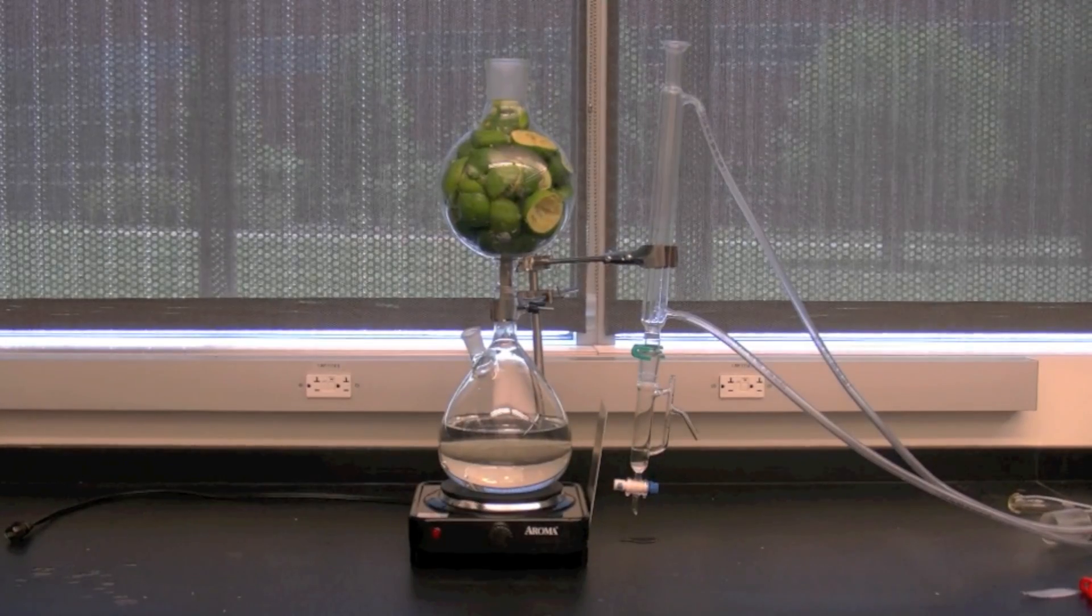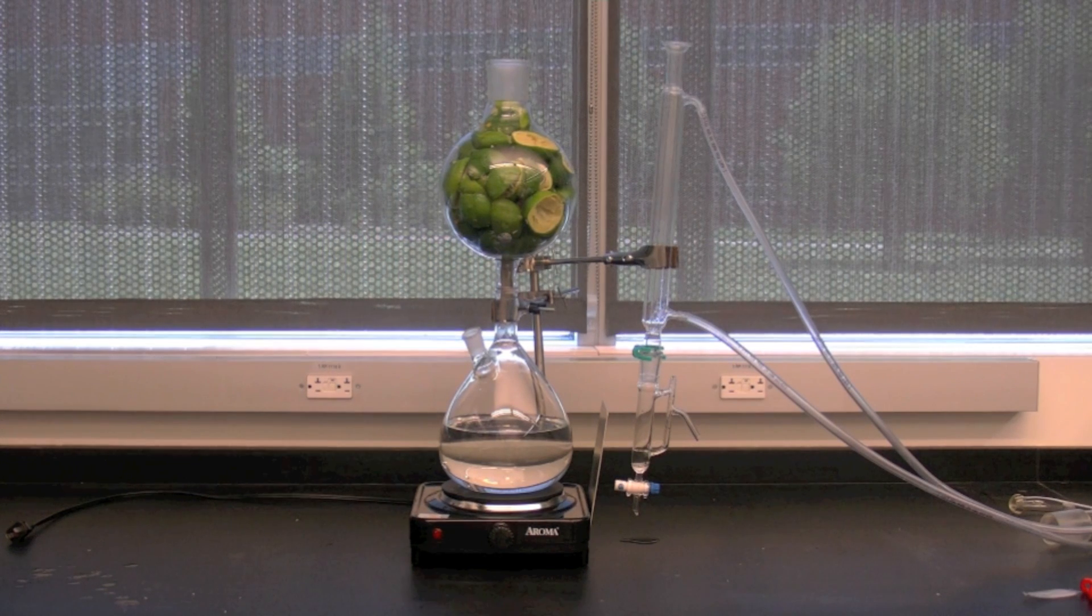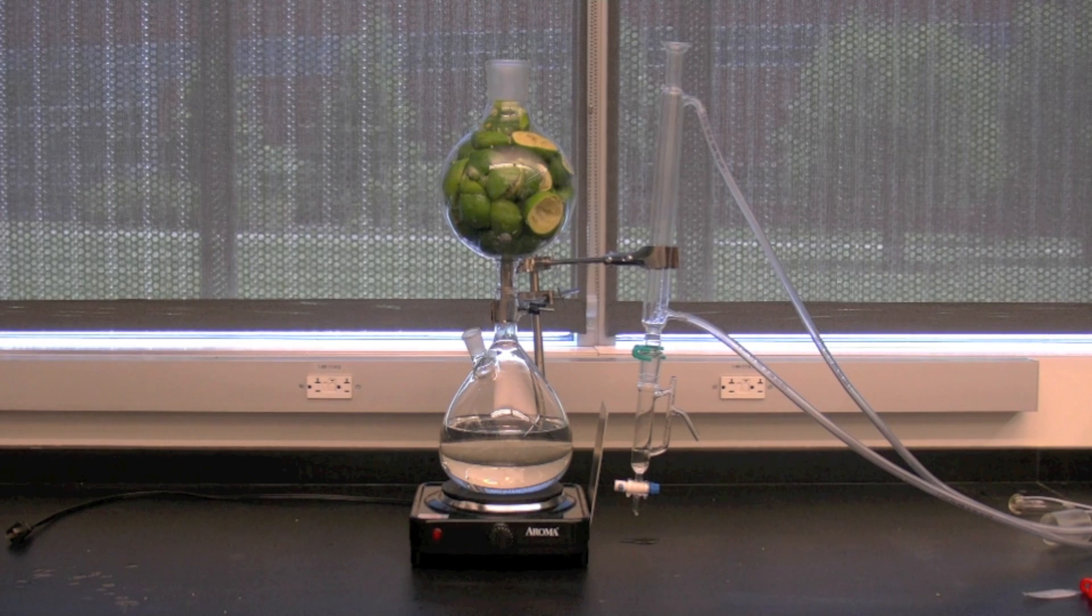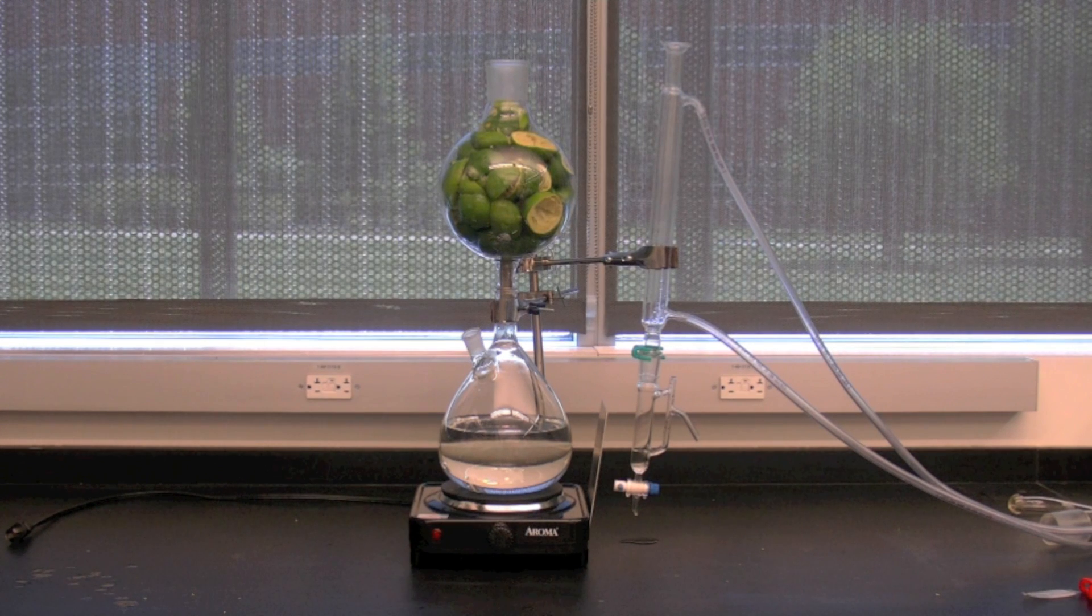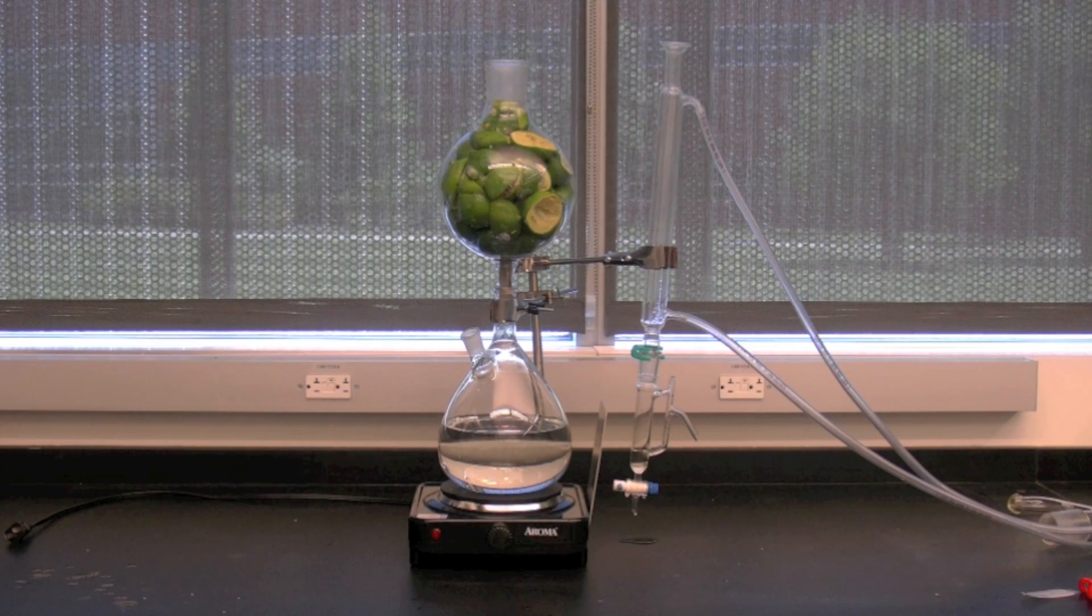This all-glass vertical steam distillation unit is used for dry steam distillation of plant material. The steam distillation of biomass generally yields two products: a relatively pure essential oil and an aqueous condensate called a hydrosol.